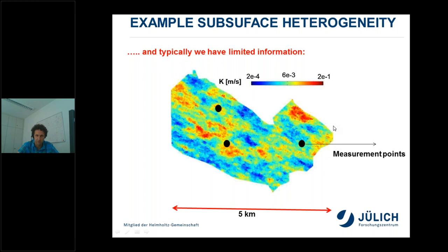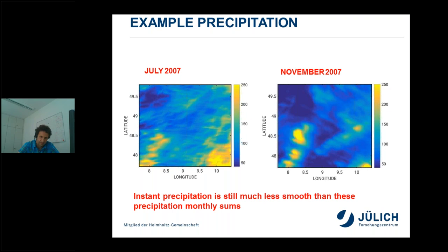The same uncertainty holds for inputs to a land surface–subsurface model. For precipitation we see, for an area in southwestern Germany, reconstructed precipitation for July 2007 and November 2007. Spatial variability is large — it can be five times larger in hilly areas like the Black Forest compared to flatter areas. At instantaneous time points the patterns are even less smooth and more variable.